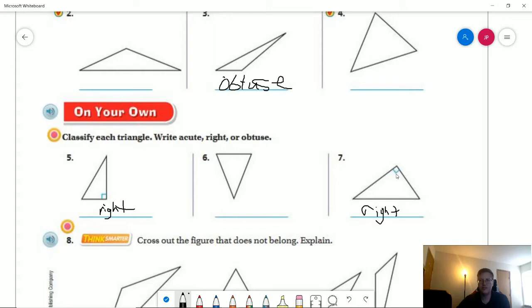Number six would be acute and number seven would be right. Again, because if we ever see this marking here, that is a giveaway that it is a right triangle.